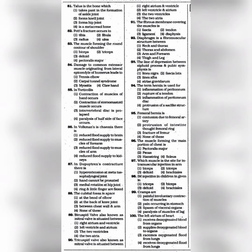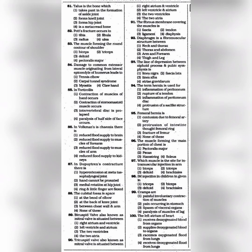Question 97: Which muscle is the site for intramuscular injection in the arm — the answer is option 3: Deltoid. Question 98: IM injection in children is given in — the answer is option 2: Rectus femoris. Question 99: Cramps are — the answer is option 1: Painful involuntary contraction of muscles. Question 100: The left atrium of the heart — the answer is option 3: Receives oxygenated blood from the lungs.